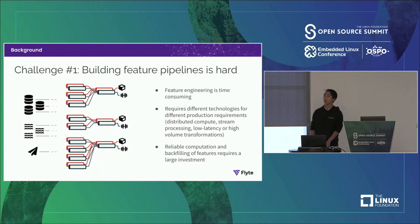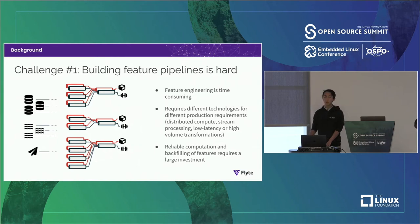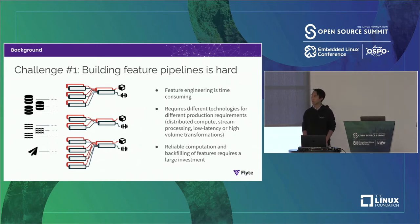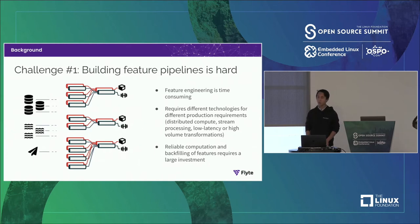There are a whole bunch of challenges around feature engineering. We're going to talk about three of them. The first challenge is that building feature pipelines is extremely difficult. This isn't entirely unique to machine learning — building data pipelines in general is already very difficult. But specifically in machine learning, building feature pipelines is famously time consuming yet very high ROI. There's a famous quote: applied machine learning is basically feature engineering.